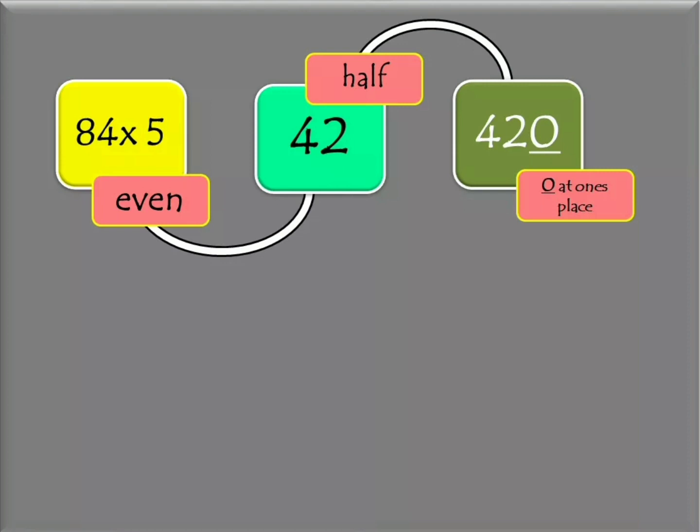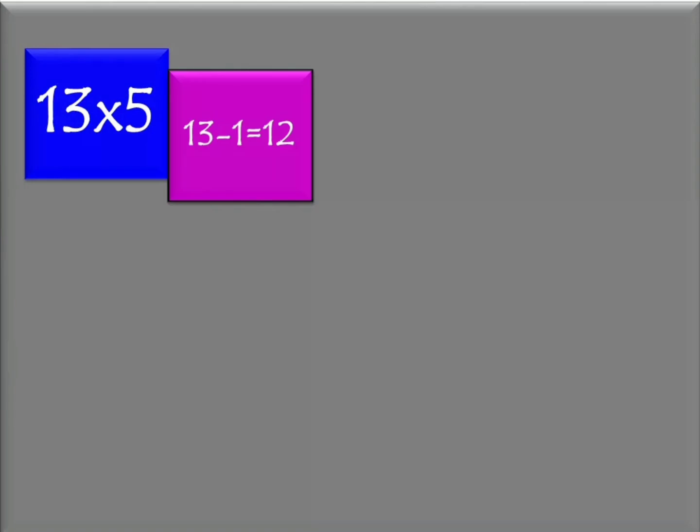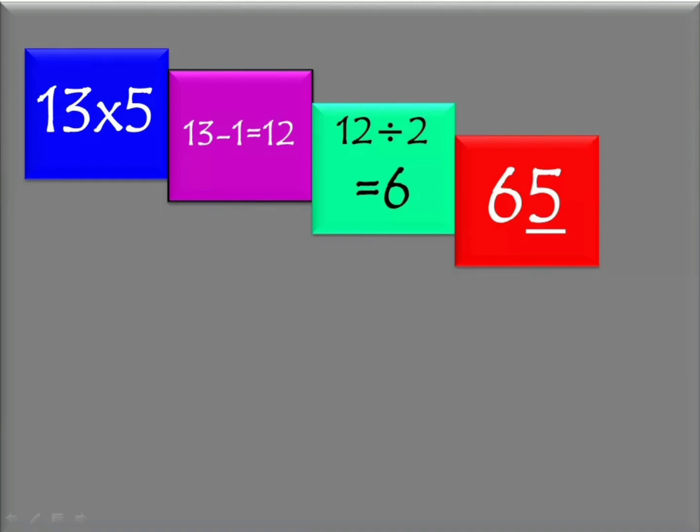Let's have 13 and 5. What is the product of 13 and 5? 13 is an odd number. First, subtract 1 from 13 — the difference is 12. Next, half of 12 is 6. Then, since 13 is an odd number, affix 5 at the ones place. From 6 it will become 65. Therefore, 13 times 5 is 65.